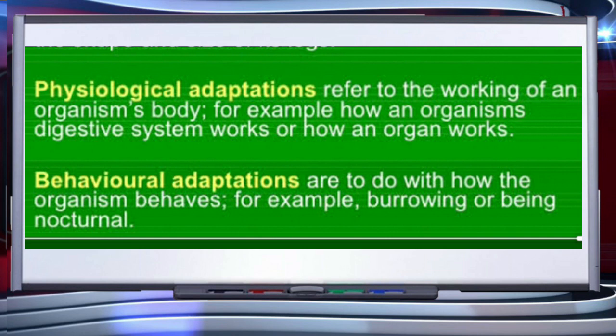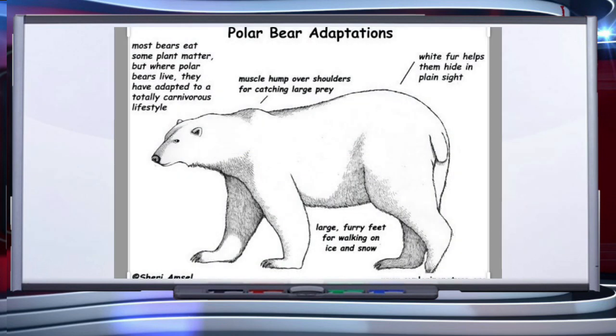The third type of adaptation is behavioral adaptation. In this, organisms show a change in their behavior. Examples include hibernation, migration, and dormancy. In hibernation, organisms go into a long winter sleep to avoid unfavorable conditions. Birds fly towards the south in the winter season because they can get sufficient food and suitable conditions for reproduction — that is migration. So these are the three types of adaptations.